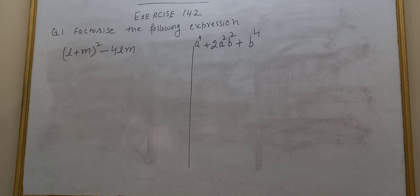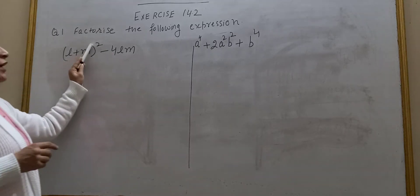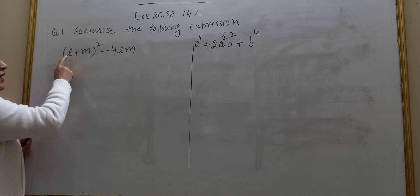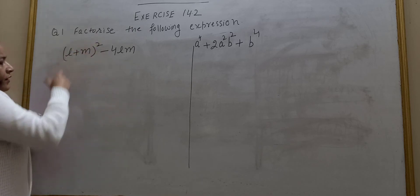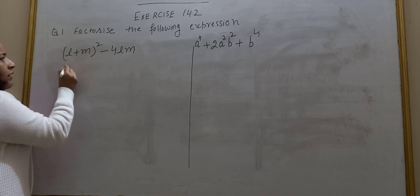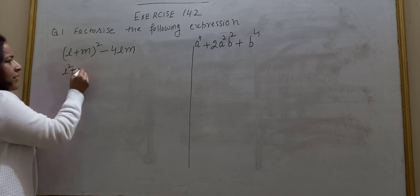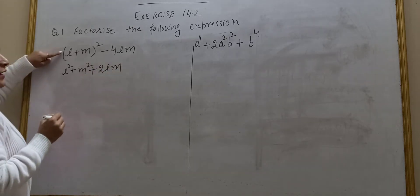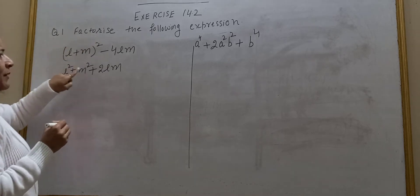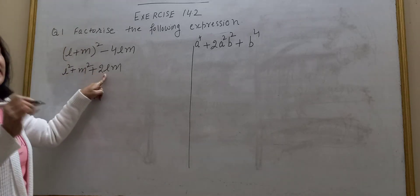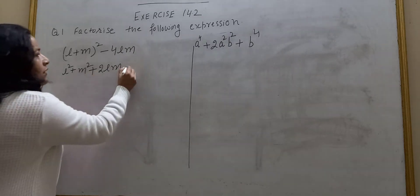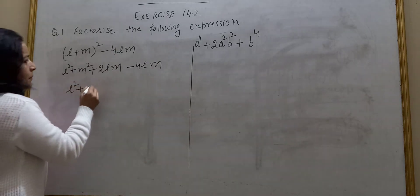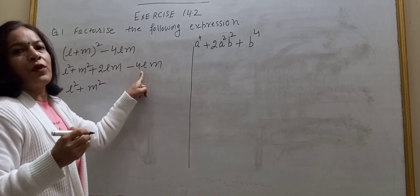Next part of question 1: L plus M whole square minus 4LM. First I will expand the identity. L plus M whole square gives L squared plus M squared plus 2LM, using identity A plus B whole square equals A squared plus B squared plus 2AB. Then minus 4LM. So: L squared plus M squared plus 2LM minus 4LM.